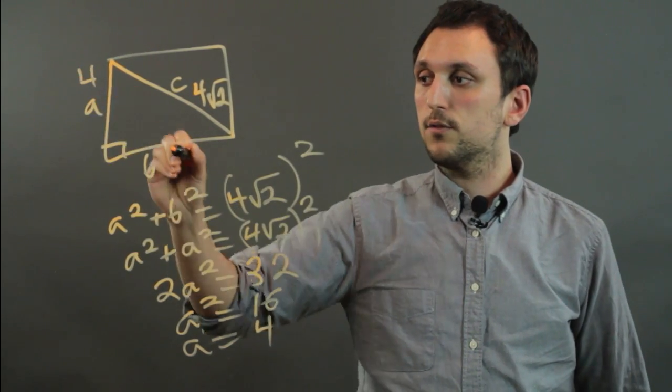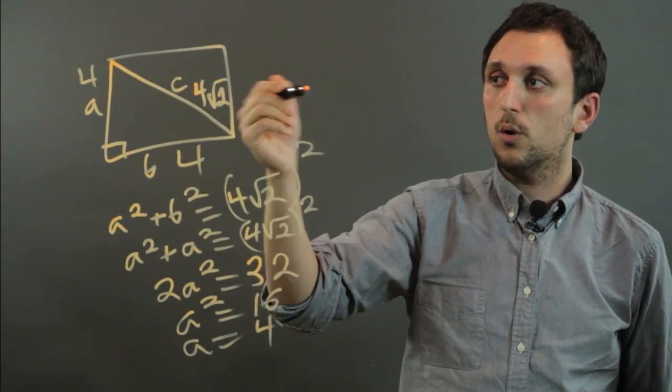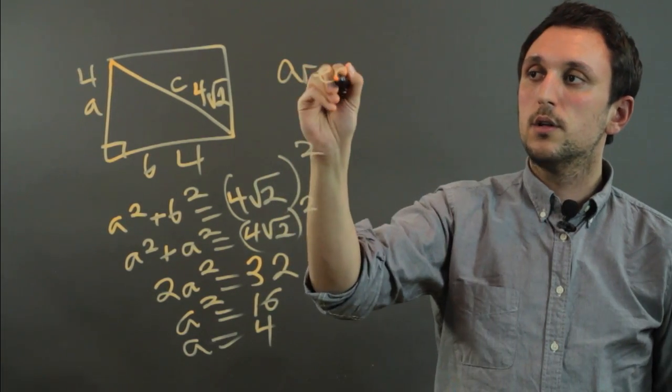So that means that this side is 4, and this side is 4, and then the area of the square would be 4 times 4, or 16. So the area equals 16.